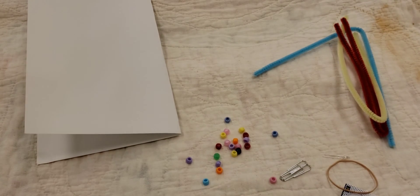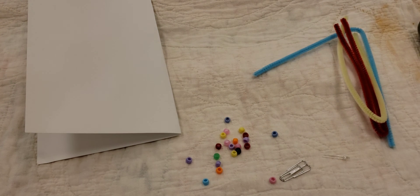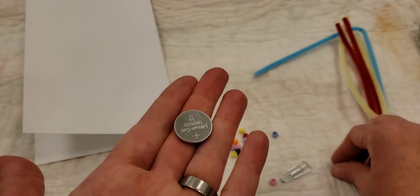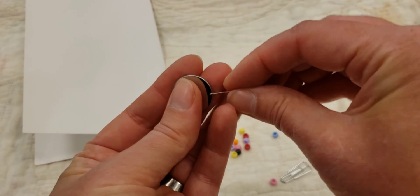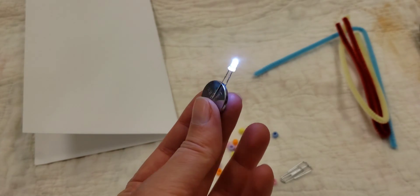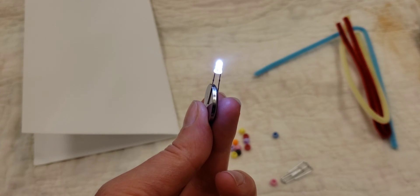You are going to want to track down some tape. Like with all of our electricity projects the first thing you're going to want to do is double check that your battery and LED light work. So you are going to put either side of your LED light on your battery and it should light up.